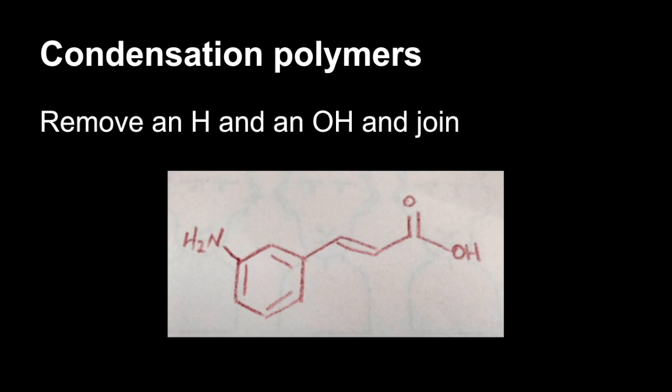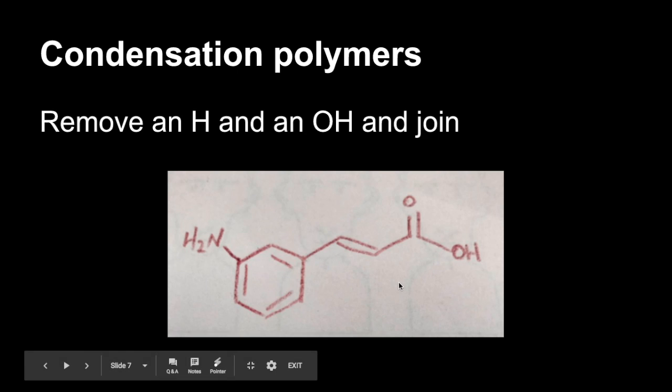Condensation polymers, so we've got the same molecule, but this time we might be asked to draw the condensation polymer from this monomer. So we'll take an H and an OH off and join together. So in this case, we'd take one of these H's off, and this OH off, and join together. So we'd make an amide group in that case.